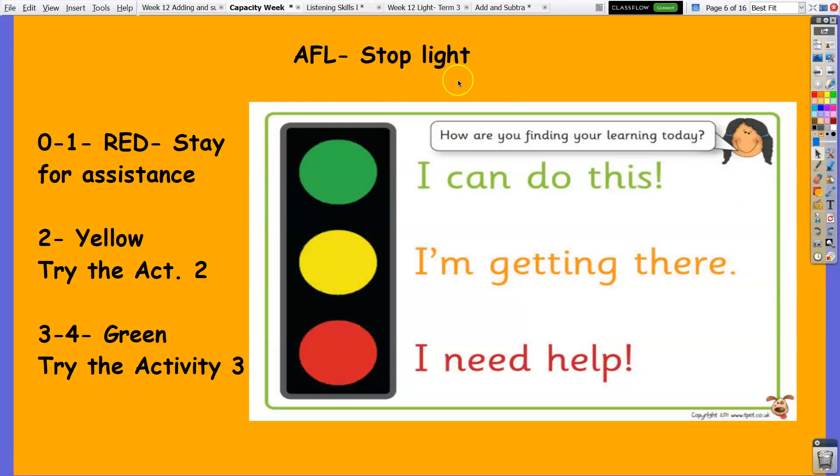Now, during the starter activity, if you get one or less you are in red—it means you need help, so stay tuned and learn from this. Those who get two, yellow—you are getting there. And those who get three or four, you can do this. You have learned something already before. Now we are just going to use that knowledge to answer the activities.